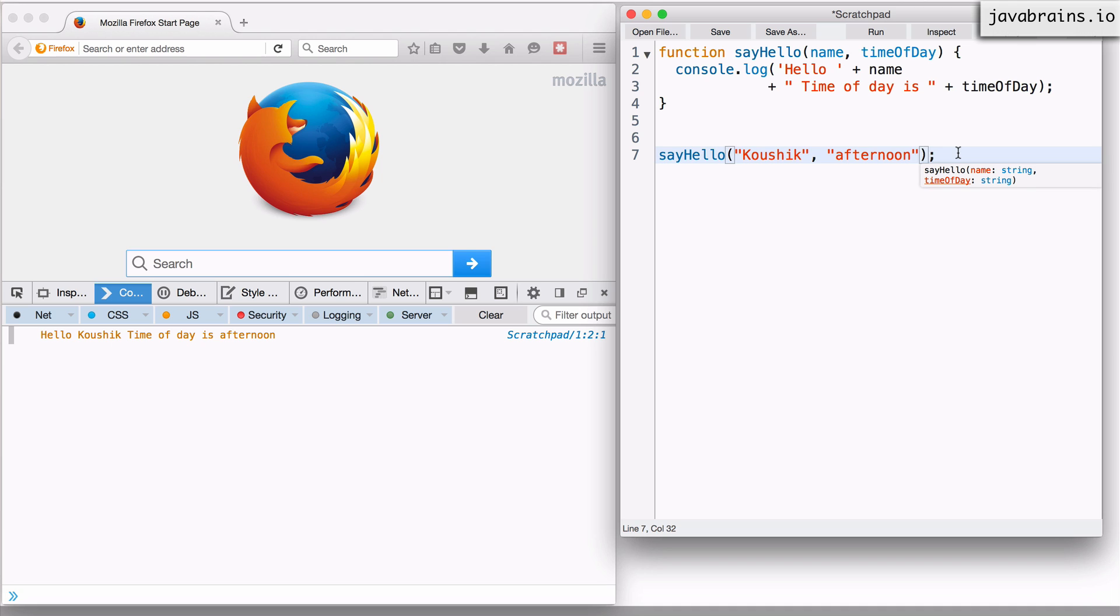If I call it with two arguments, the right value goes to the right argument. So Kaushik is going to go to the first argument and afternoon is going to go to the second argument. But what happens if I do something like this?